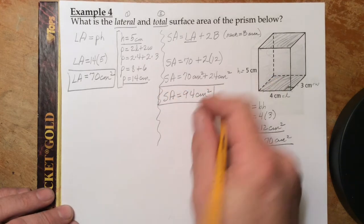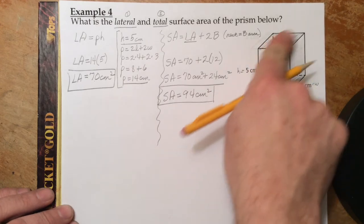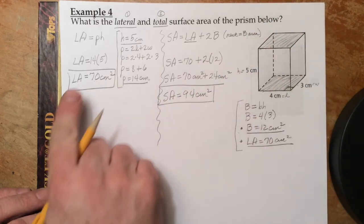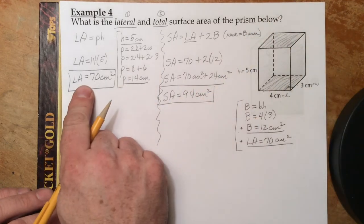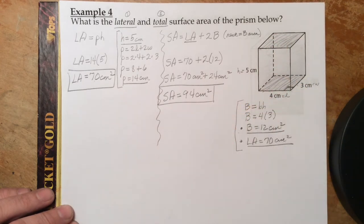There's our total surface area — we have all the surface area around the entire thing. The lateral surface area covers everything except for the two bases.